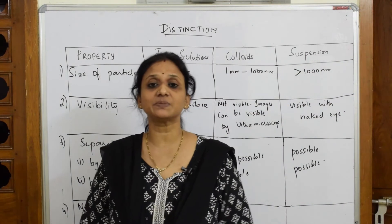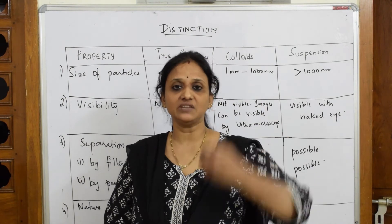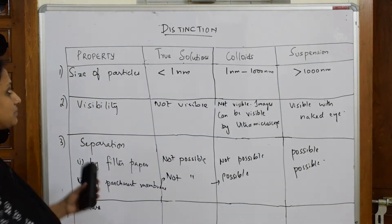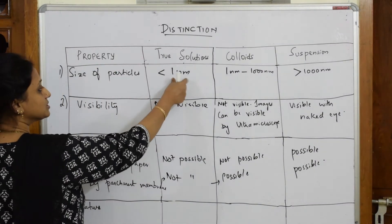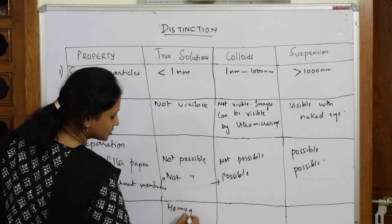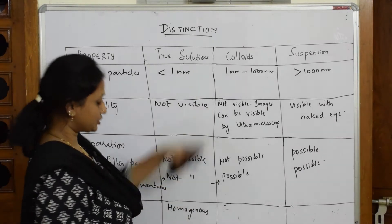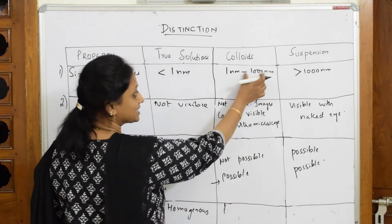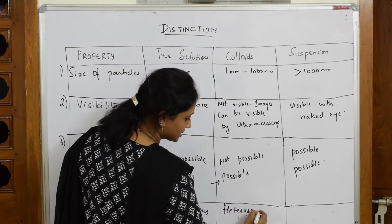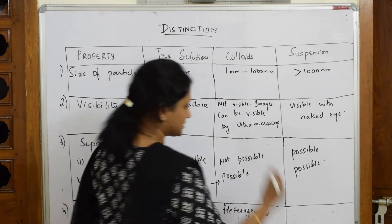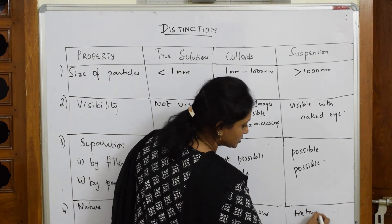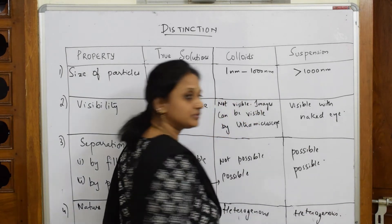Next criteria is nature — whether it is homogeneous or forms two separate layers. True solutions are homogeneous in nature because particle size is very small and they are evenly distributed. Colloids, with particle size ranging up to 1000 nanometers, form layers and are heterogeneous. Suspensions are also heterogeneous in nature.